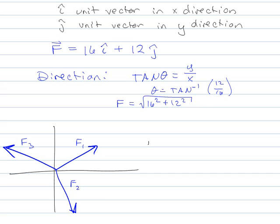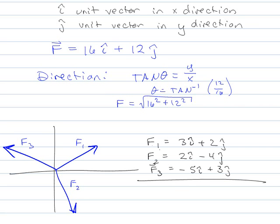If I know how to write them in IJ notation, so if I know that F1 is equal to 3 I hat plus 2 J hat, and F2 is 2 I hat minus 4 J hat, and F3 is minus 5 I hat plus 3 J hat. And if I wanted to know the resultant of all those vectors, I literally just add them. So 3 and 2 minus 5 is 0 I hat plus 1 J hat. And again, I could find the direction and the magnitude just by using the tangent and the square root of squares. So it's all kinds of exciting.